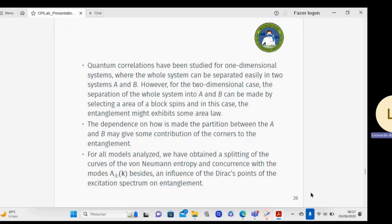Quantum correlations have been studied for one-dimensional systems, where the whole system can be separated easily into system A and B. However, for the two-dimensional case, the separation of the whole system into A and B can be made by selecting an area of a block of spins, and the entanglement exhibits some area law. The dependence on how is made the partition between the A and B may give some contribution of the corners to the entanglement.